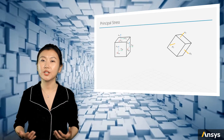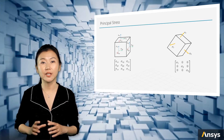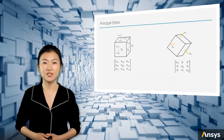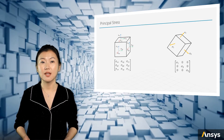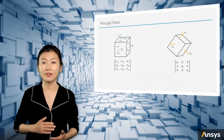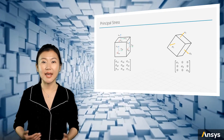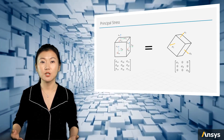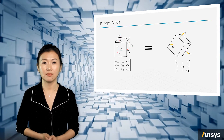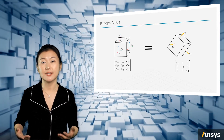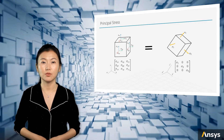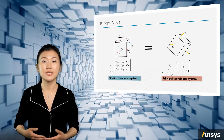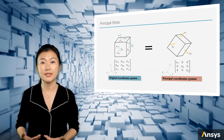So we go from a cube with nine stress components to a rotated cube with three stress components. The tensor expressions are as shown here. For the principal stress, the three components are located along the diagonal of the tensor. Remember that although these two stress expressions look very different, they represent exactly the same stress state. The reason they look different is that they are written in different coordinate systems — one in the original x, y, z axes, and the other in the principal axes x prime, y prime, and z prime.